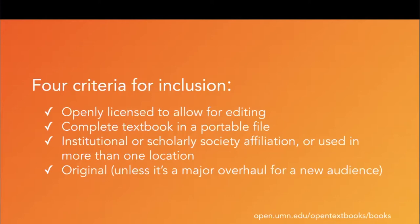The fourth and final criteria is that the book needs to be the original book, or the book of record. That's simply so we can keep the library organized for our primary users — our faculty audience — and not overwhelm them with different adaptations of a book where they're trying to discern differences between books that otherwise look pretty similar. The exception is if a book has been overhauled for a new audience. For example, if a statistics book is changed so the title becomes 'Statistics for Nursing' and each chapter has been tailored to a nursing audience, we would add it to the collection because it's now an entirely new book.